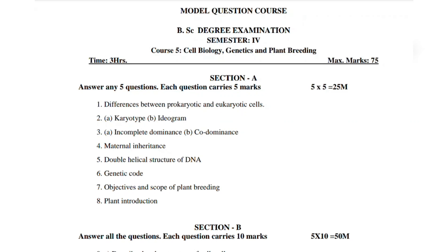Hello all, once again welcome back to Homely Classes. BSc Botany 4th Semester Paper 5 - Cell Biology, Genetics and Plant Breeding important model question paper. In previous videos I shared important questions for Botany Paper 4, Geology Paper 4, Chemistry Paper 4 and Paper 5. Now in this video we have Botany Paper 5.